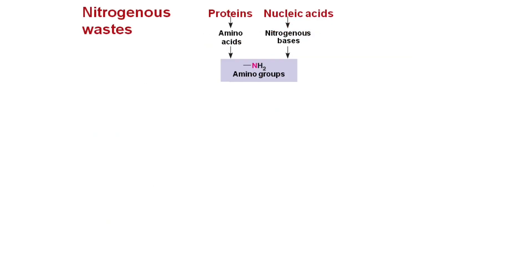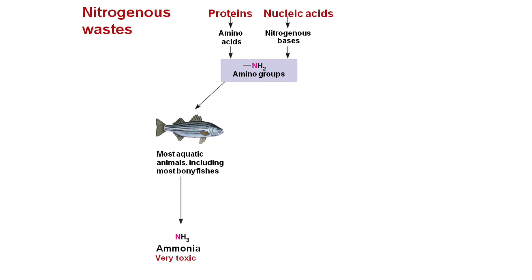By the way, the ammonia that is produced during the deamination of proteins and also during the deamination of nucleic acids when they are broken down is actually pretty toxic to cells. Living things have therefore evolved various methods of removing and detoxifying this ammonia. Ammonia needs lots of water in order to be excreted quickly and safely out of the body, so most aquatic animals including most bony fish release the ammonia to the surrounding water through their gills or other body surfaces.